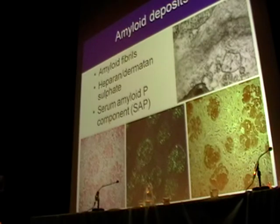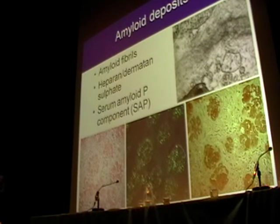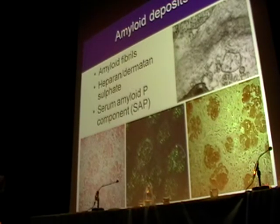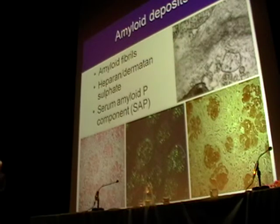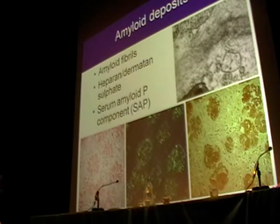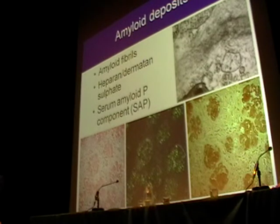Apart from amyloid fibrils themselves, the amyloid deposits always contain heparan and dermatan glycosaminoglycans — the proteoglycan molecules — and SAP, the protein that we are therapeutically targeting here.